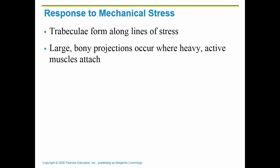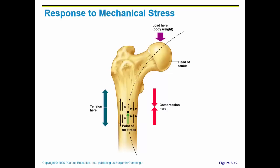Trabeculae, which is the bony portion of spongy bone, form along lines of stress. Large bony projections occur where heavy active muscles attach, meaning there's going to be a very large spot where a big muscle needs to attach via a tendon. This picture shows body weight against the head of the femur — the femur is the largest bone in your body, your thigh bone — and you can see where the most stress is placed, so you'll have the thickest portion of the shaft right where most of that stress is occurring.